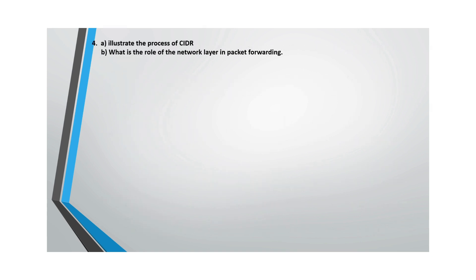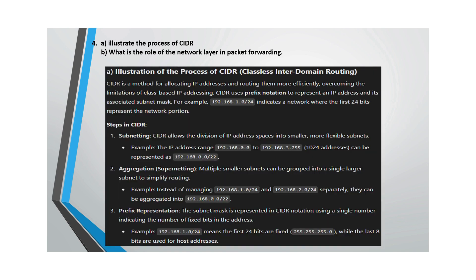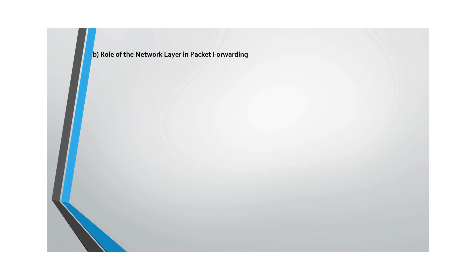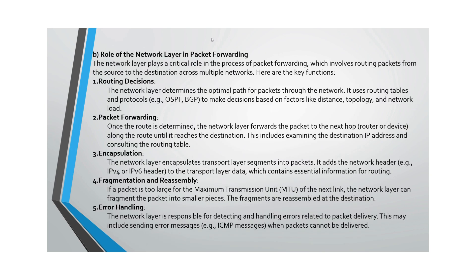Question 4 has two parts: Part A asks you to illustrate the features of CIDR, and Part B asks about the role of the network layer in packet forwarding. For Part B, the key roles include routing decisions, packet forwarding, encapsulation, fragmentation and reassembly, and error handling — written point-wise.